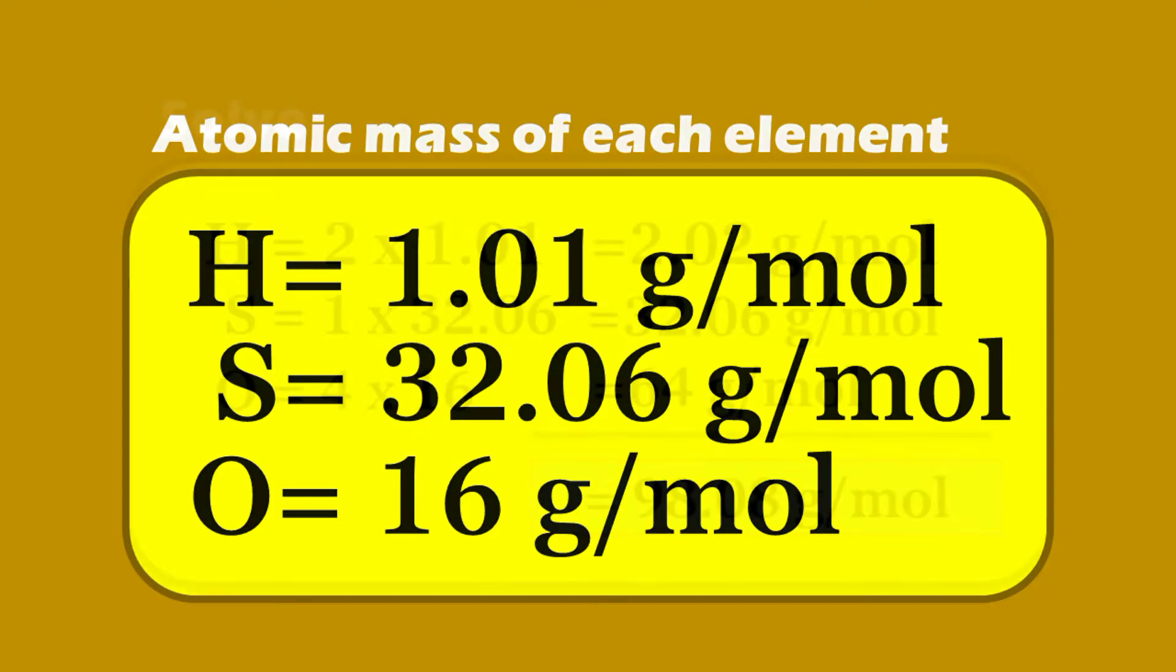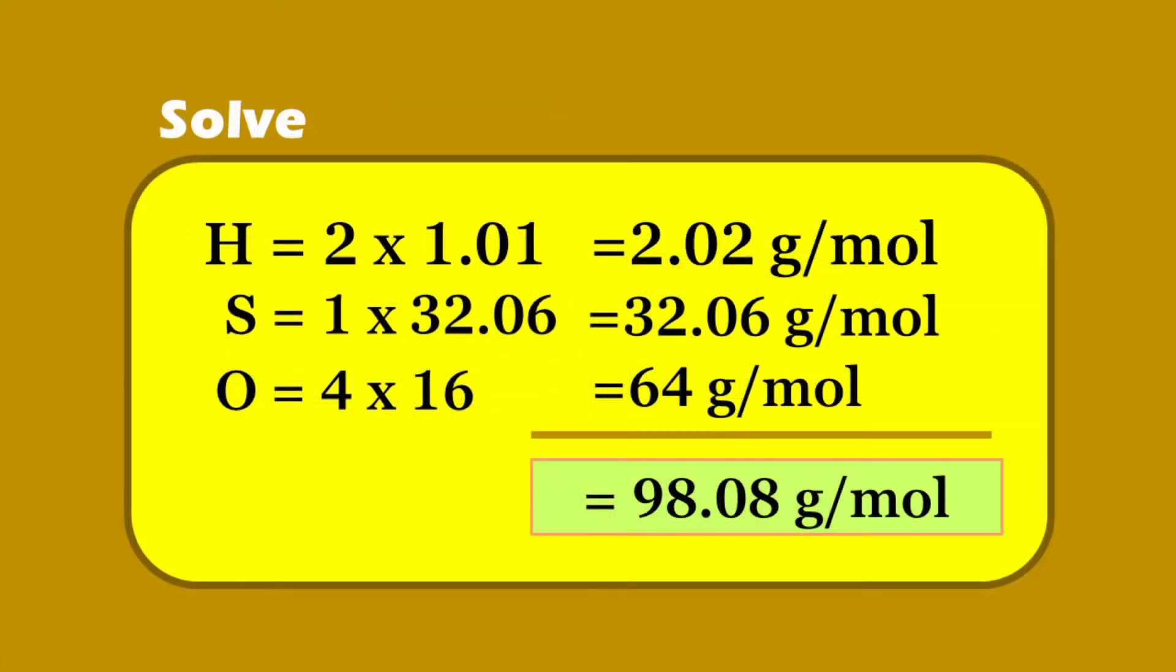Let's solve for the molecular mass of sulfuric acid by multiplying the number of atoms and the atomic mass of each element. Hydrogen: two atoms times 1.01 grams per mole is equal to 2.02 grams per mole.